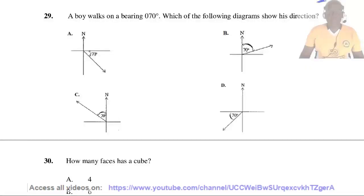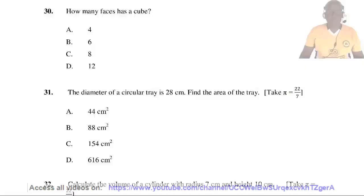Question 29. A boy walks on a bearing of 070 degrees. Which of the following diagrams shows his direction? The right direction is B. Question 30. How many faces has a cube? A cube has 6 faces. So the right answer is B.